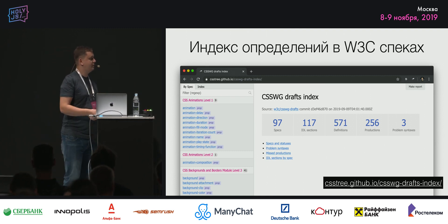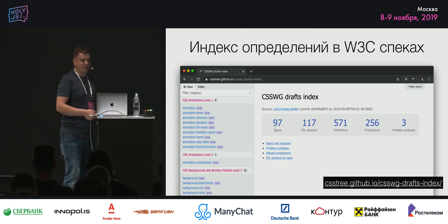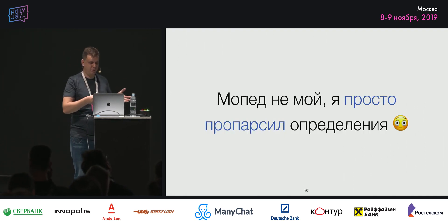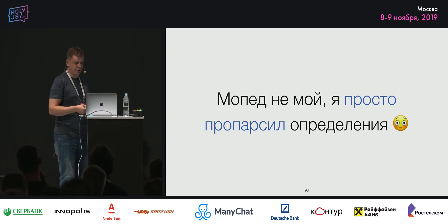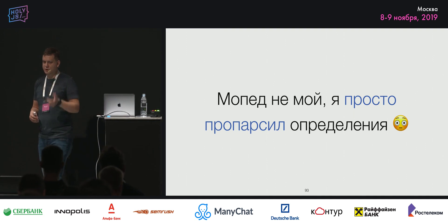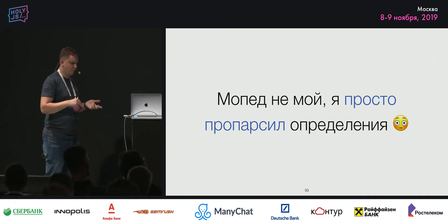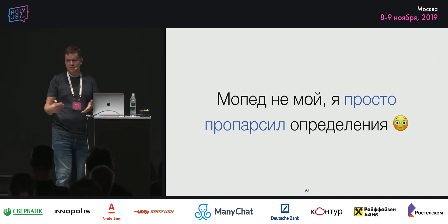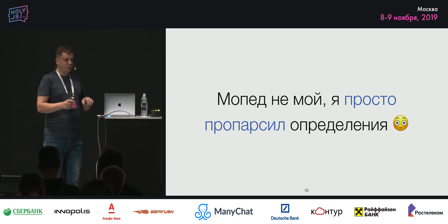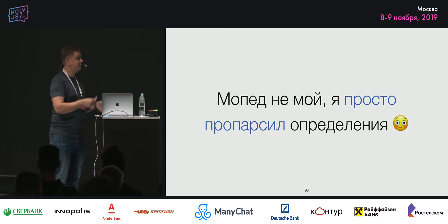Вся эта история началась с задачи работы с CSS definition syntax, а в итоге получилась большая история с большими последствиями. Во-первых, появился словарь; во-вторых, поправились многие ошибки в словаре и в самих спецификациях — я сделал множество pull requests, потому что парсер ломался на каких-то определениях. Оказалось, там были ошибки и опечатки. Словарь есть, AST есть, теперь нужно сделать непосредственно сам matching.